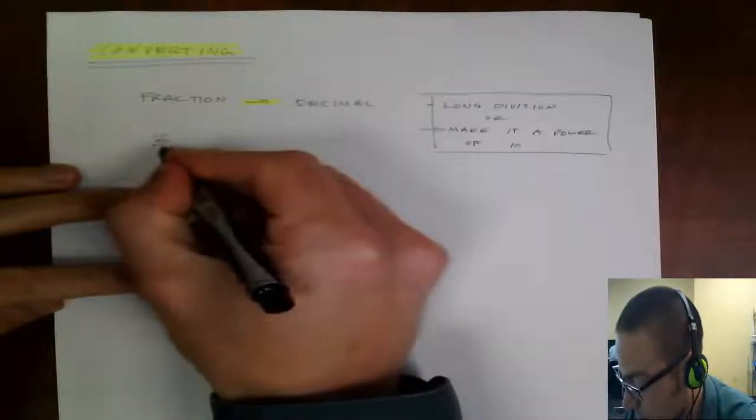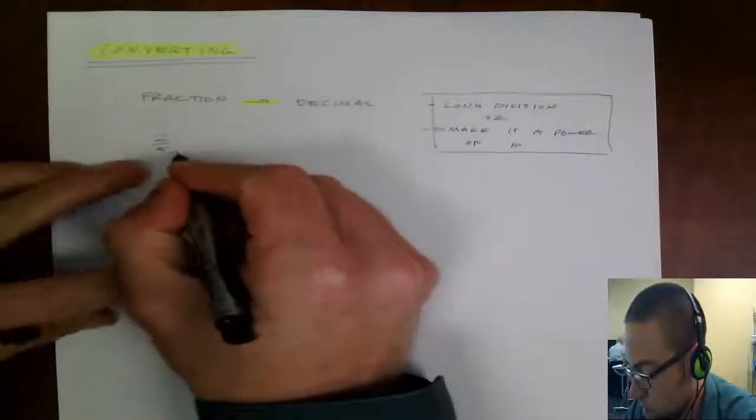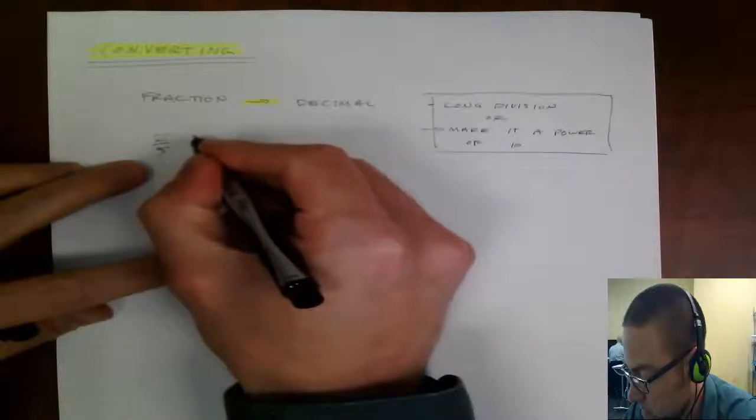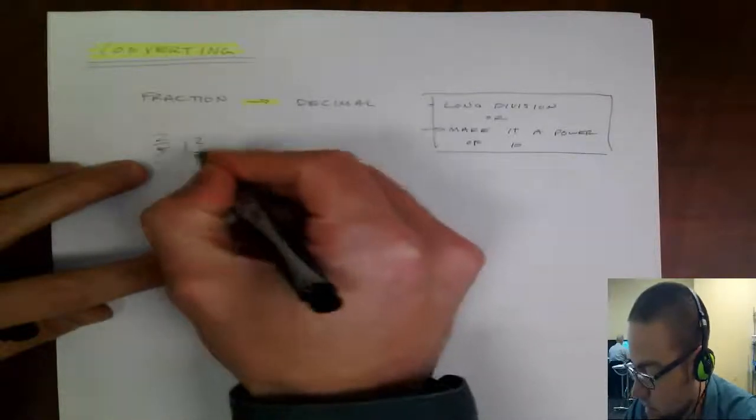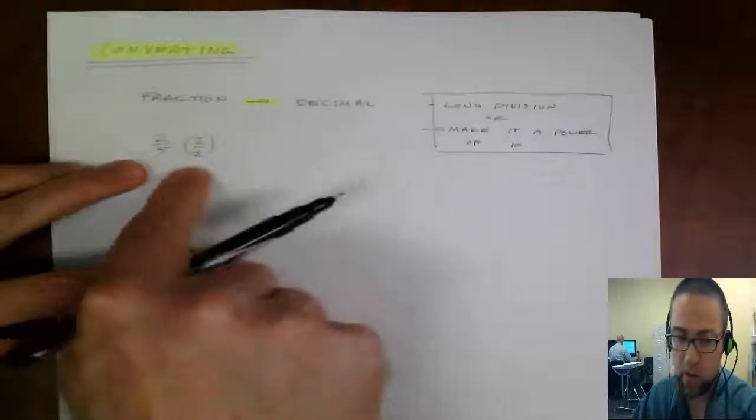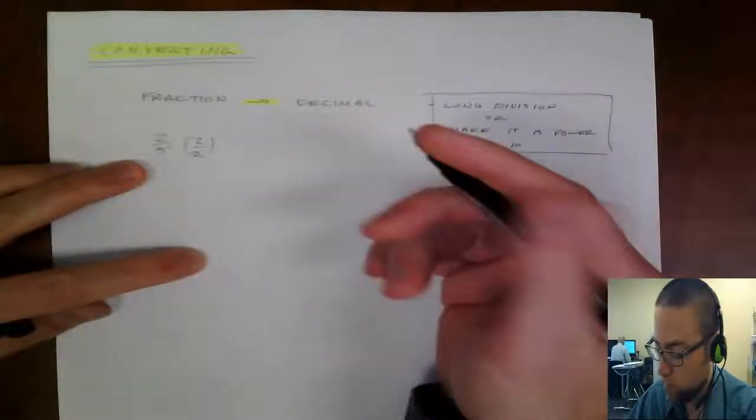But it's a shortcut method. So if you have something like 2 fifths, if you can make that into a 10, multiply the top and bottom by 2, right, to make it a 10. And this is just like multiplying by 1. Multiplying by 1 doesn't change the value of anything, right?